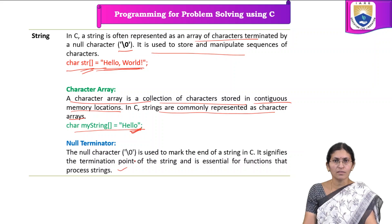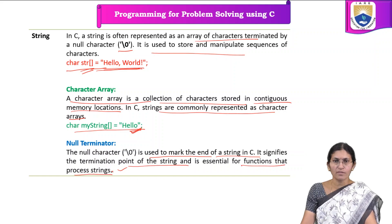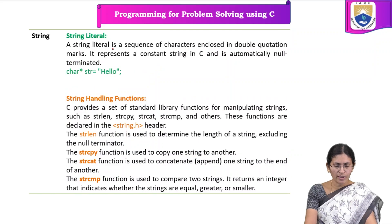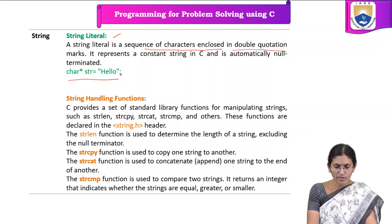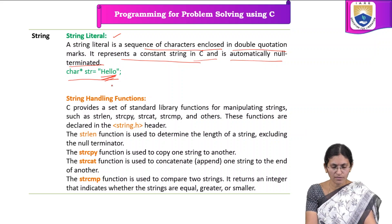The null character is used to mark the end of the string in C. It signifies the termination point of the string and is essential for functions that process strings. When defining a string, we need to insert a null character at the end. When we define a string using a string literal — a sequence of characters enclosed in double quotes — the null character is automatically inserted by the compiler, so no need to add it manually.